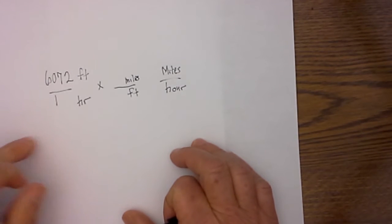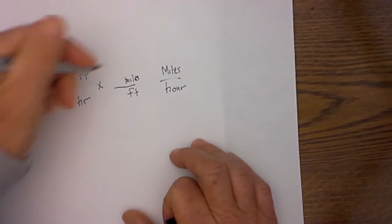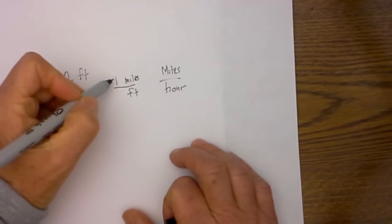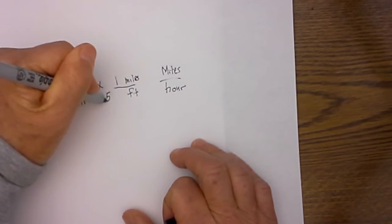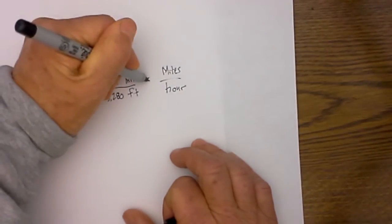What I do next is I then put a one by the larger unit. I know that miles are larger than feet, so I'm going to put a one. And then I ask myself, if I have one mile, how many feet is that? And that is 5280. I then have it set up.